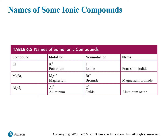Here's a table showing some examples. The formulas are on the left-hand side. We have KI: K is potassium and I is iodine. Potassium stays as the potassium ion, and iodine becomes iodide, giving us potassium iodide. For MgBr2, that's magnesium and two bromines — or bromides, because it's ionic — giving us magnesium bromide. In the last example, Al2O3: Al is aluminum, and O is oxygen, which becomes oxide when it's an anion. So we have aluminum oxide.